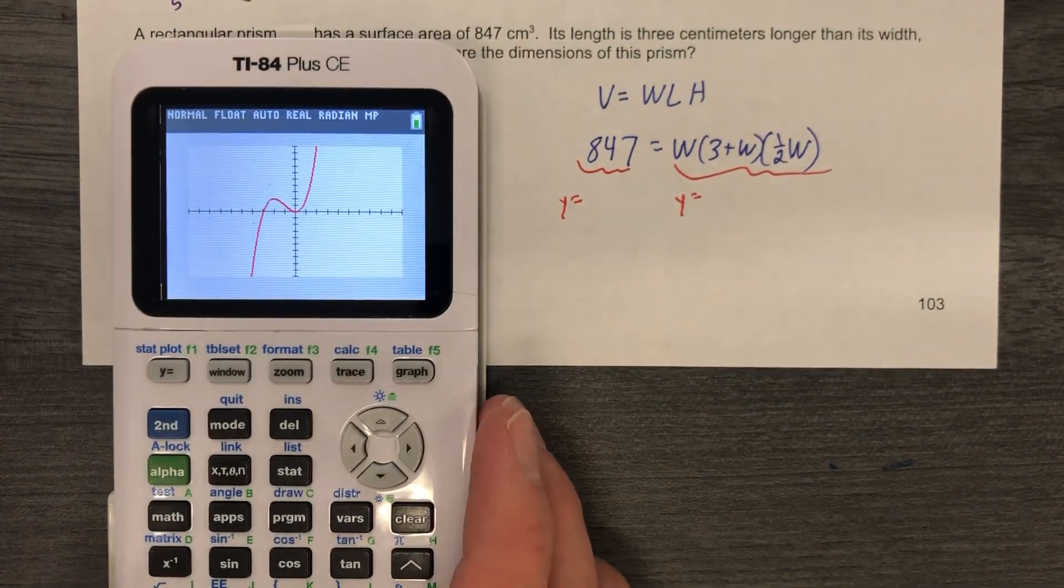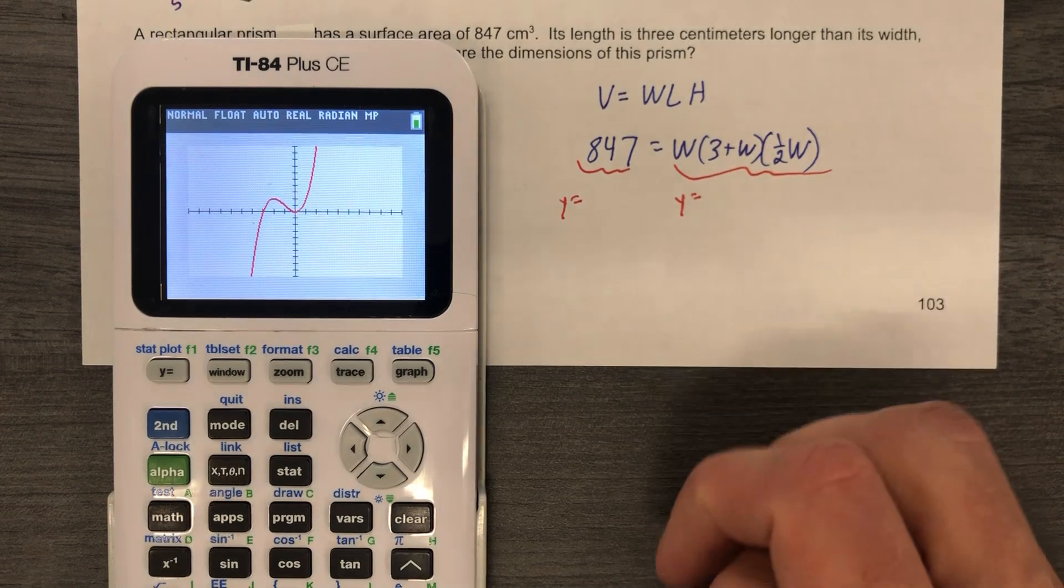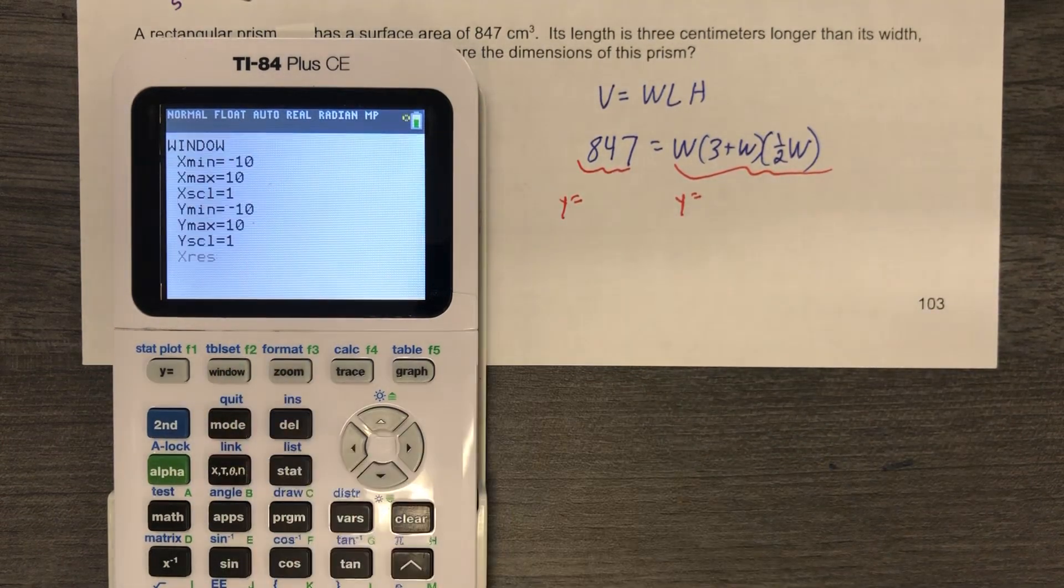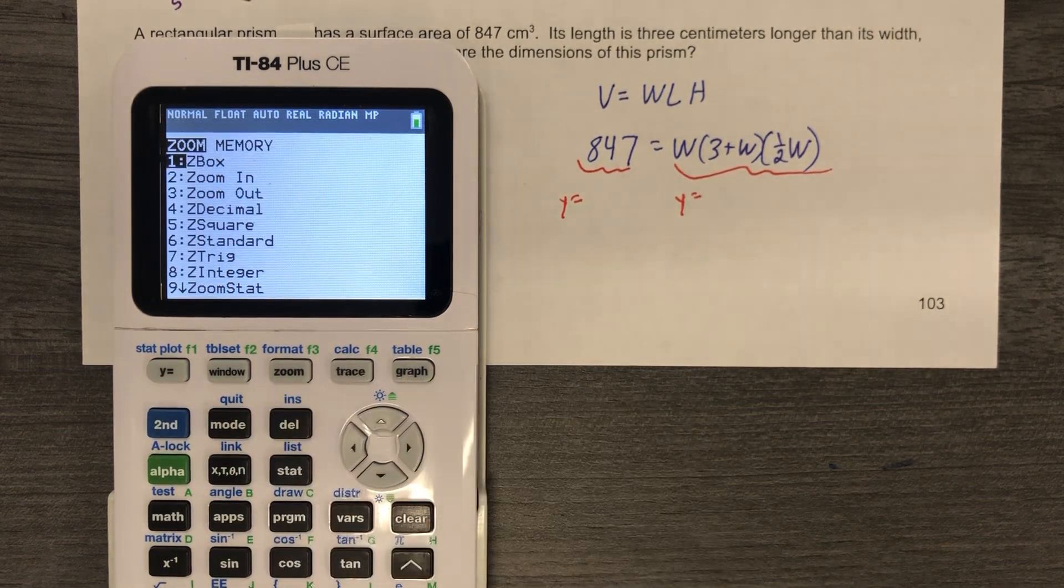And so given that I'm looking for 847 and where it intersects with this, that changes things a bit. So I need to adjust my window. You will too if you're using Desmos. I'm going to do a little trick here where I go from zero to 15. It's a guess. And then zoom fit.